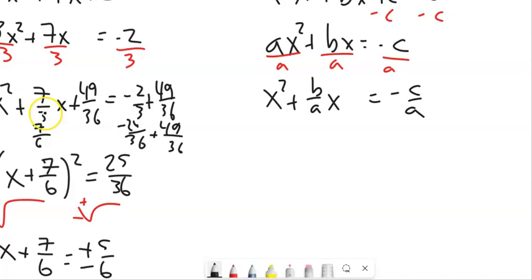So half of 7 thirds, notice we just doubled the denominator, so I'll do that here. Half of B over A is B over 2A. And if I square that, B squared is B squared.